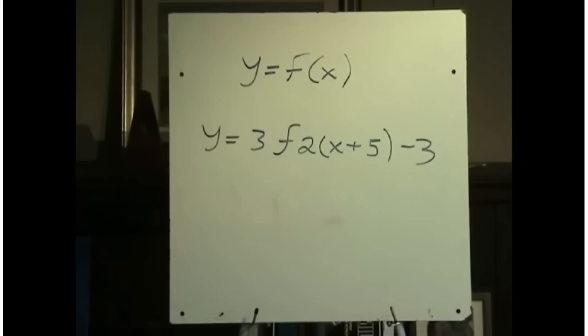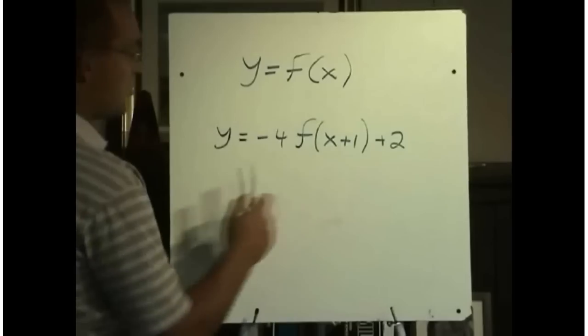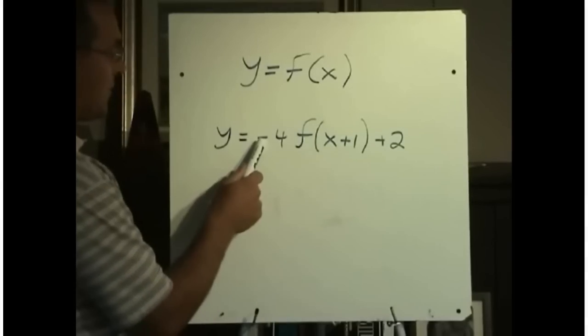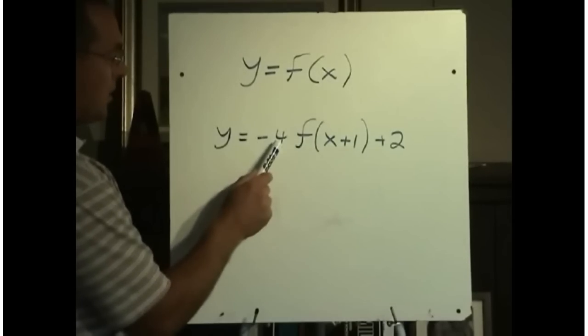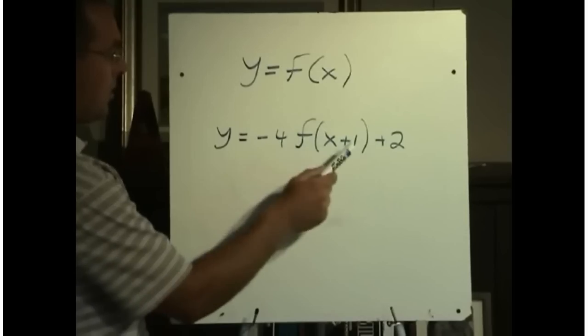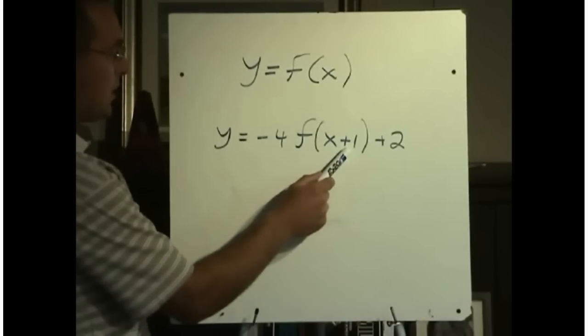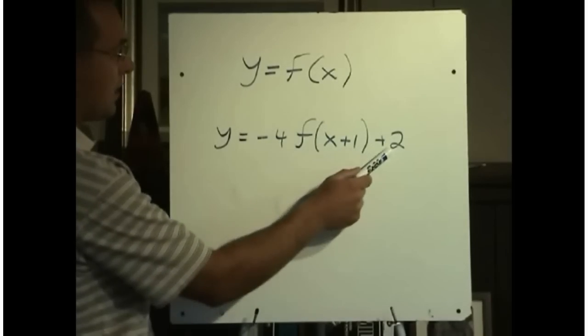Let's look at another example. How about y equals negative four f of x plus one plus two. So we have a negative here. Again, think of this as like a negative y. We're going to replace y with negative y. That would be a reflection in x, so reflect in x. A vertical expansion by a factor of four. Moved to the left one. And moved up two.